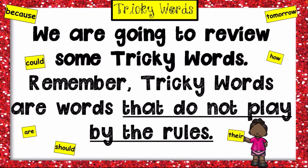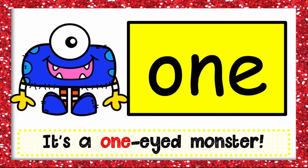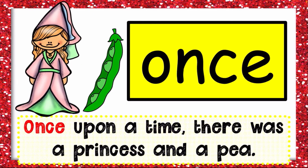We are going to review some tricky words. The first one is 'one' — it is 'one,' like a one-eyed monster. The second one is 'once' — once upon a time there was a princess and a pea.